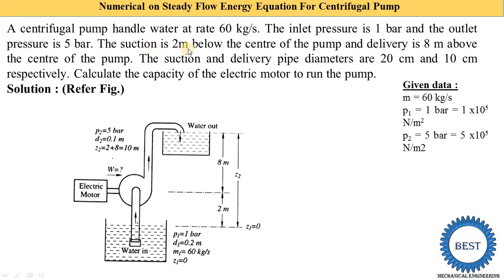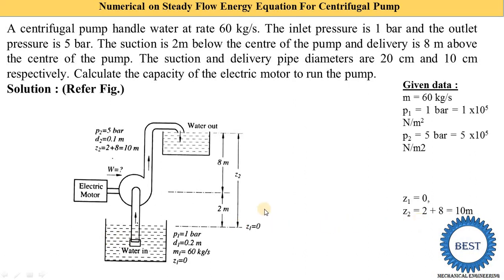The suction is 2 meters below the center of the pump and delivery is 8 meters above the center of the pump, as shown in the diagram. We set z1 = 0 at the pump center reference, so z2 = 2 + 8 = 10 meters.